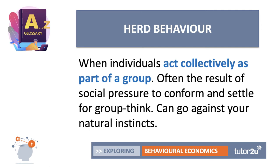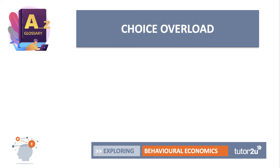There are two generally accepted explanations of herd behaviour. First, the social pressure to conform — people want to be accepted, and this can mean behaving in the same way as others even if that behaviour goes against what might be right for you. Second, individuals often find it hard to believe that a large group could be wrong — four heads are better than one — and they follow the group's behaviour in a mistaken belief that the group knows something the individual doesn't. This is sometimes described as the bandwagon effect or groupthink, and herd behaviour is particularly common in financial markets and goods and services markets.